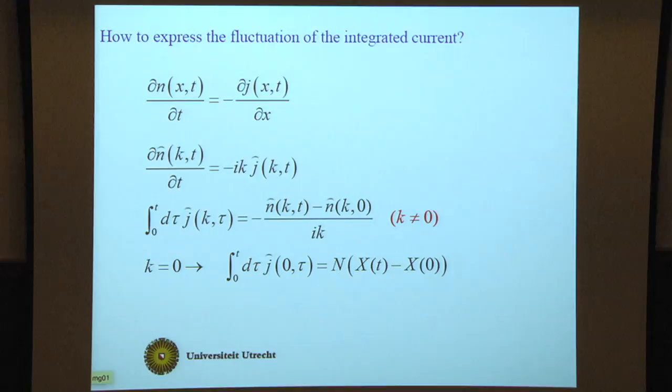This works for k not equal to zero. For k equals zero, the time integral of the total current can be identified as the number of particles times the displacement of the center of mass.